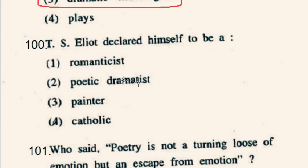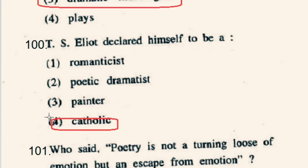Question number 100: T.S. Eliot declared himself to be what? Eliot became a British subject in 1927 and converted to Anglicanism. He encapsulated his views as Classicist in Literature, Royalist in Politics and Anglo-Catholic in Religion. So the correct option is 4th option: Catholic.